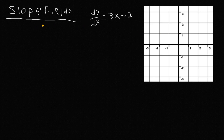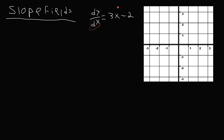Let's start off with what do we do when you have a differential equation. Generally, you can integrate it. If you see there's only one variable on the right side, you know you can just separate these variables. So we're going to get all of the things with a y on the left side and all of the things with an x on the right side. So we're going to multiply both sides by dy/dx.